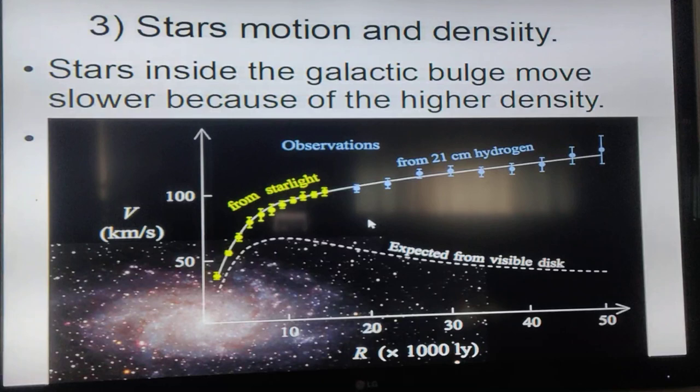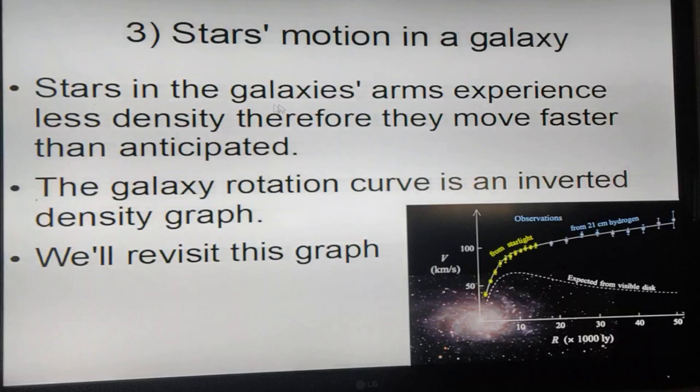The reason as I'm seeing it is that stars inside the galactic bulge move slower than they're supposed to because of higher density. But as you move away from the bulge the density decreases, which means now stars can move faster. The velocity of stars gives us the density of the galaxy. Stars in the galaxy's arms experience less density, therefore they move faster than anticipated.